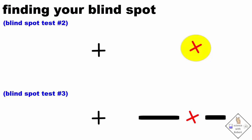For these two blind spot tests, cover your left eye and look at the black cross and move your head until at some point the red X disappears and your brain fills in the rest.